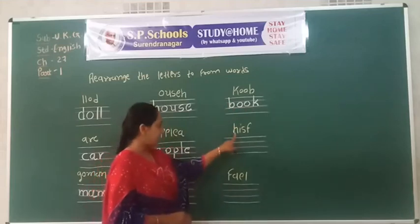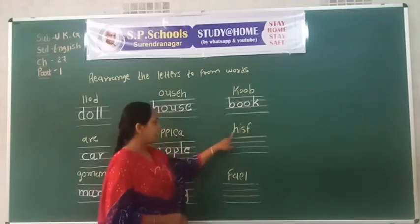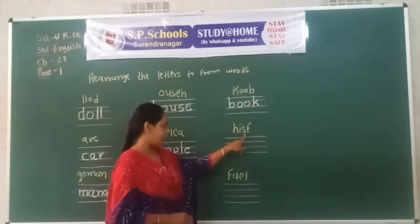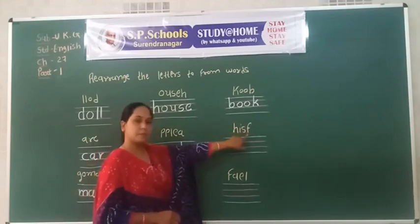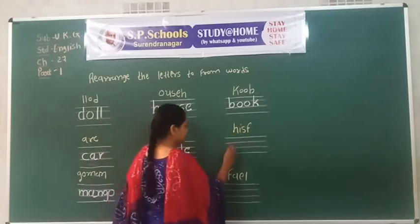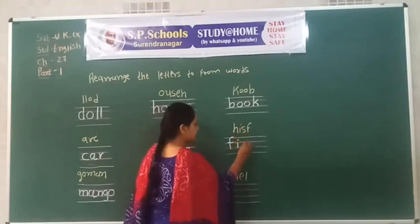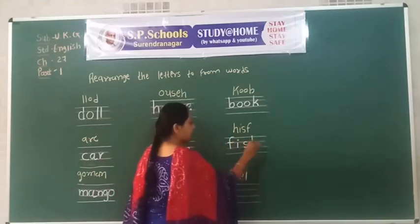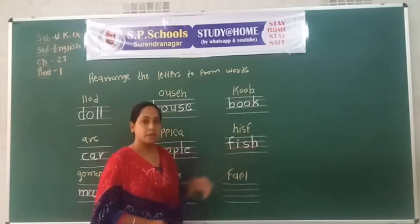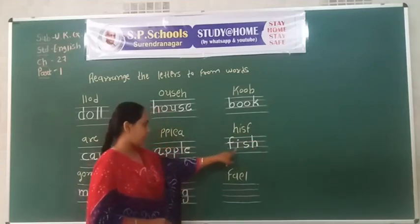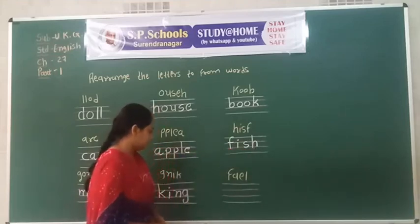Next: H, I, S, F. An easy correct word. F, I, S, H. Fish! F, I, S, H. Fish! F, I, S, H. Fish.